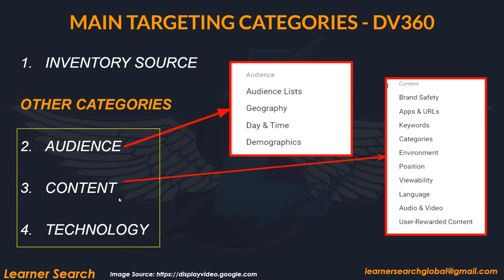Another targeting category is content. In the content category, there are many targeting options available. In this slide, you can see various targeting options available under content. They are brand safety, apps and URLs, keywords, categories, environment, position, viewability, language, audio and video, and user-rewarded content.